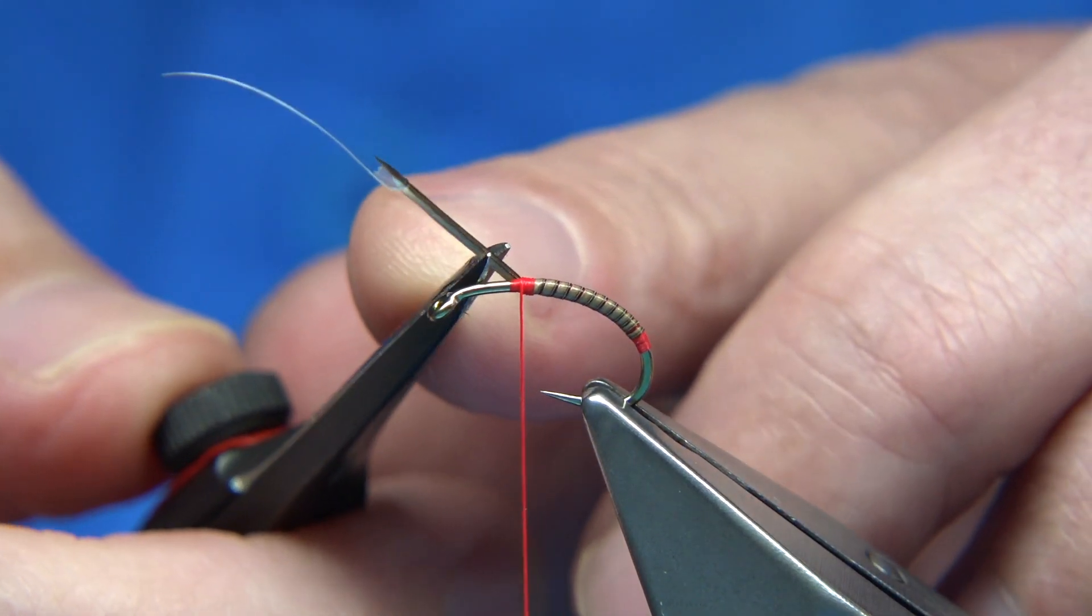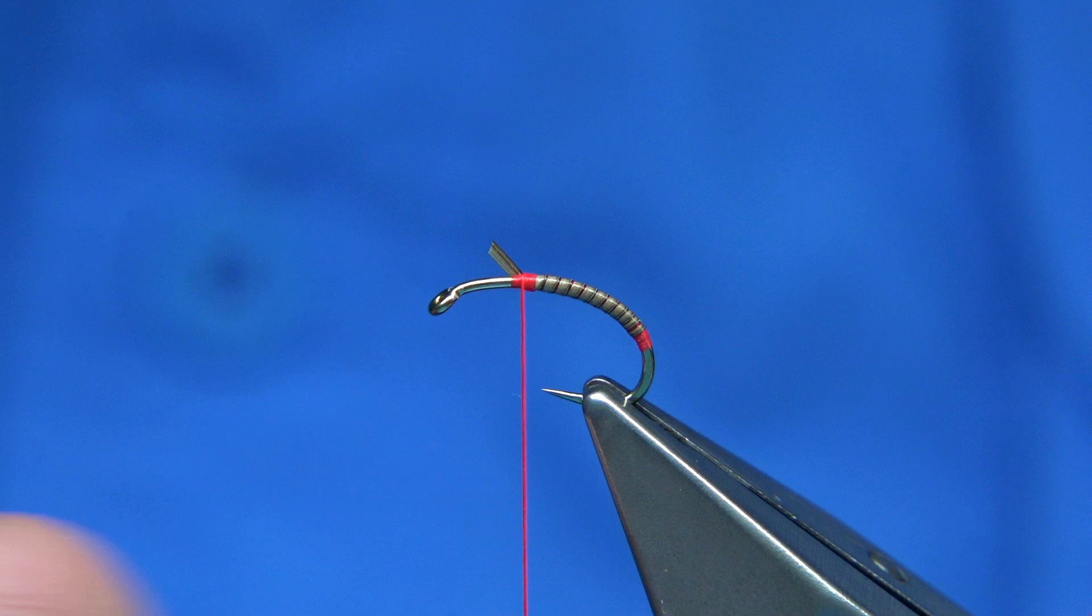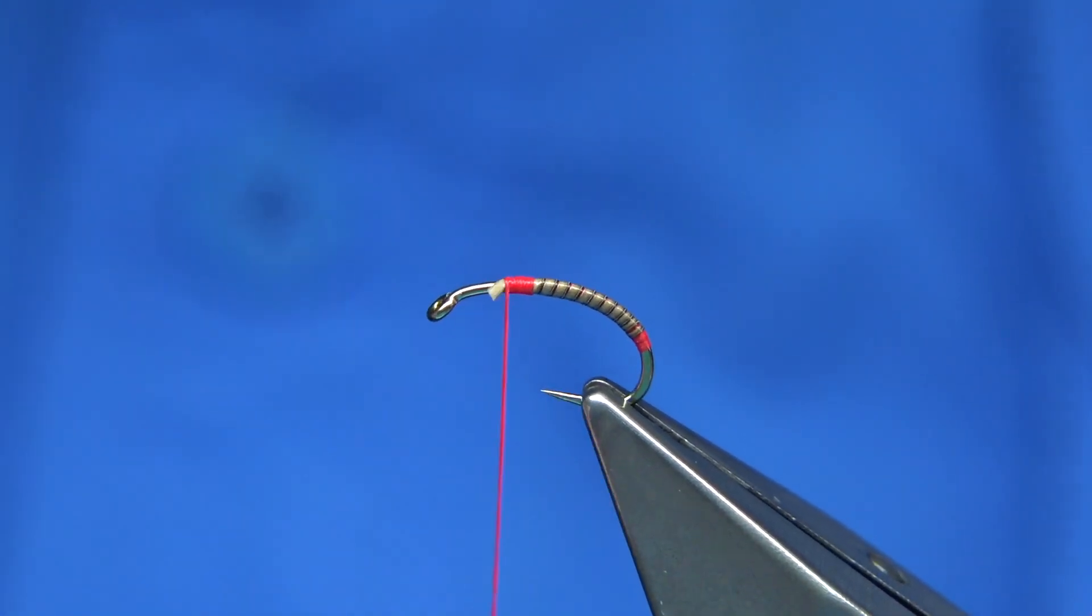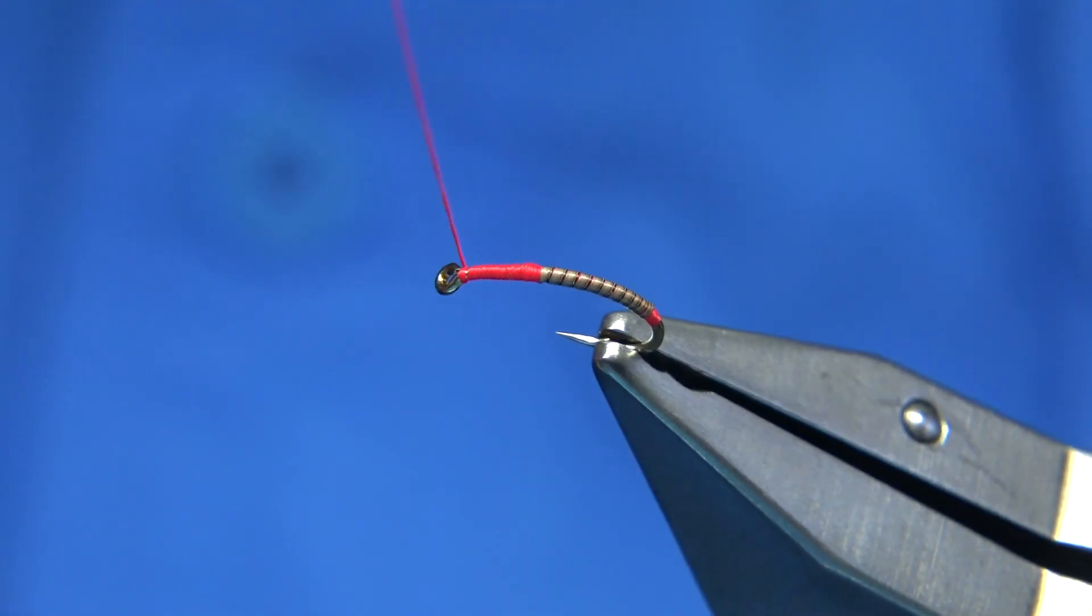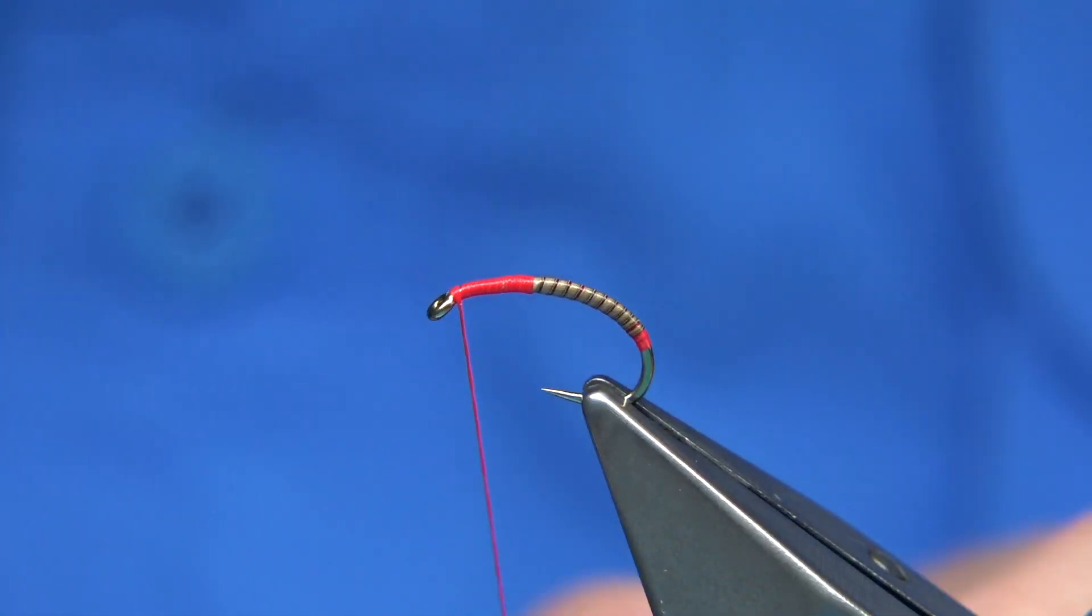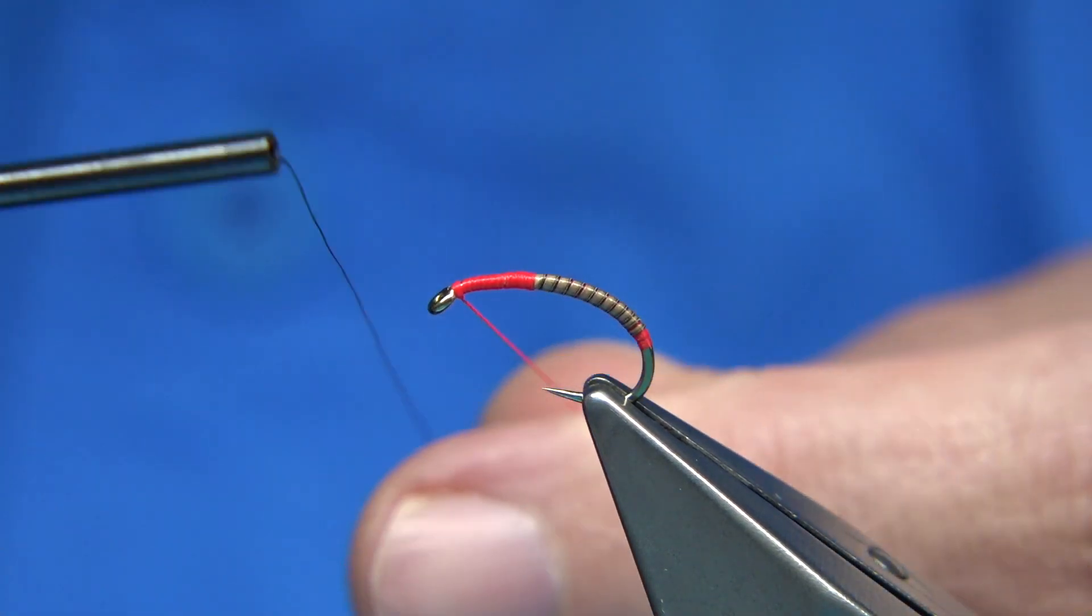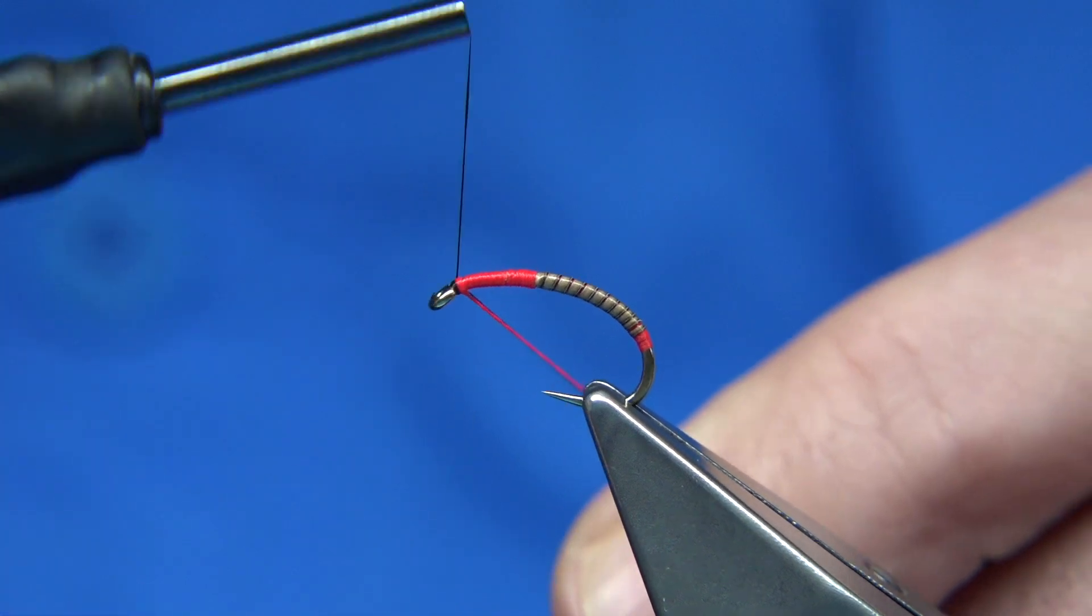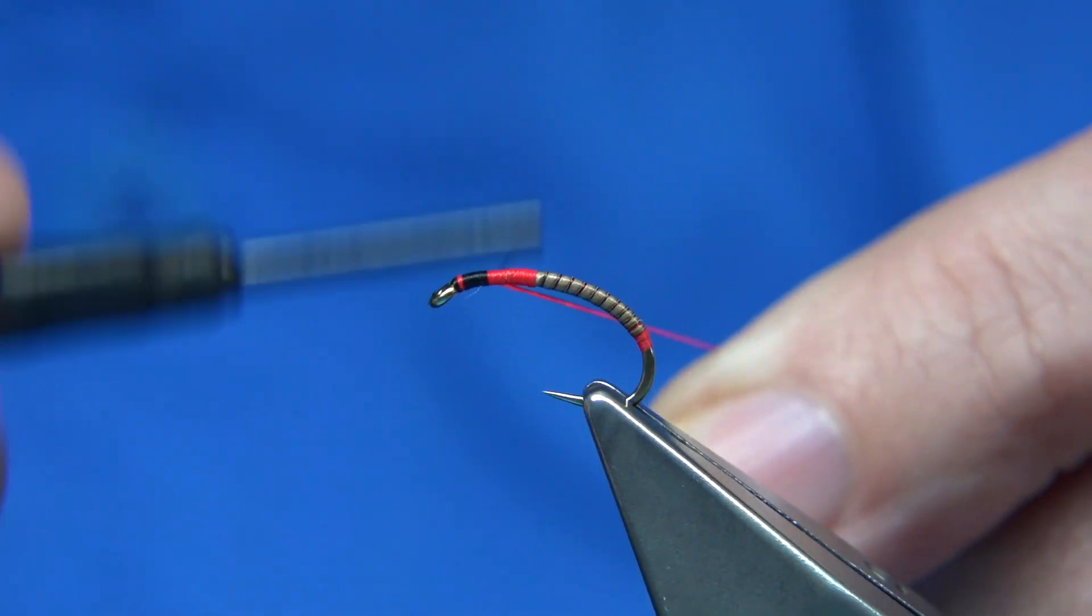Then trim away the excess. Now at this point I usually just continue on up to the eye. And then I'm going to change over to black thread. Now it could be UTC or Uni, whatever you like to use. I just have Uni on my desk.